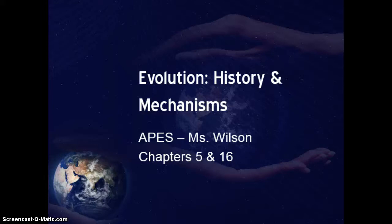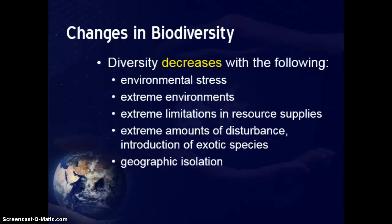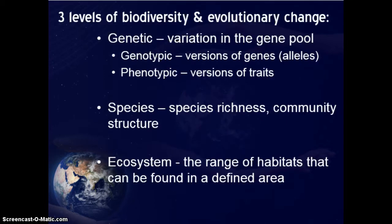In the next couple of lectures we're going to be talking about evolution. Today we're going to tackle the history and mechanisms of evolution. We're talking about evolution because it's really important in terms of biodiversity — it's pretty much where all of the biodiversity on earth comes from. When we talk about changes in biodiversity, a lot of times we focus on why diversity would be decreasing, but you also want to realize that biodiversity is increasing by a number of mechanisms as well. The number one biggest reason why diversity would actually increase is evolution.